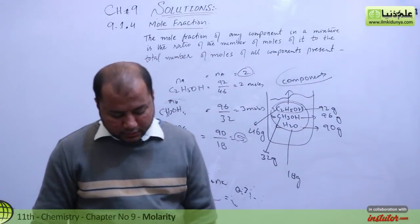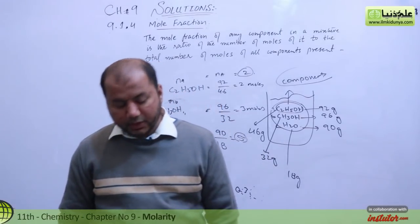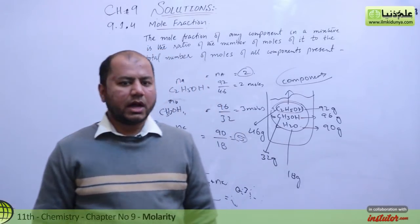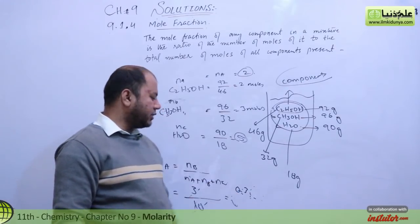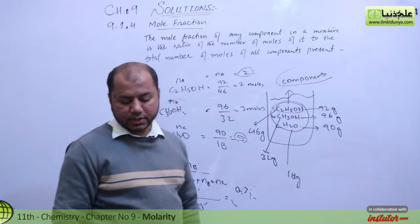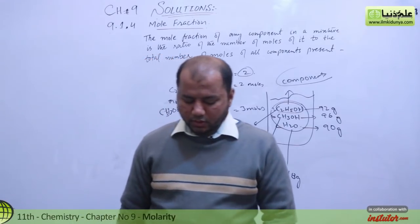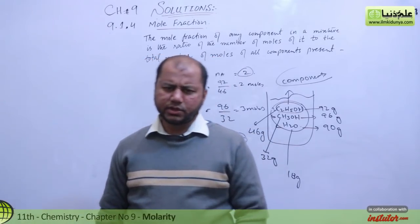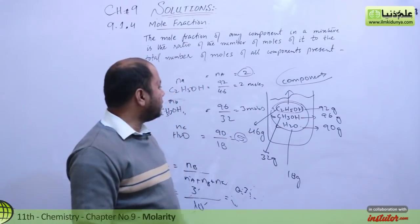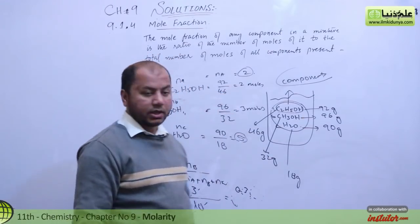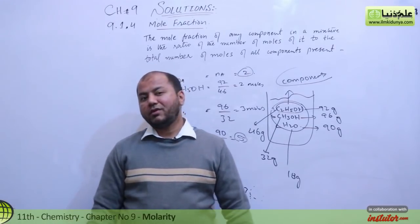If you multiply the mole fraction by 100, then the answer will be in percentage. So for ethyl alcohol, methyl alcohol, and water the percentages are 20%, 30%, and 50% respectively. The total is 100%, which is what we expect. That is what we know about mole fractions.